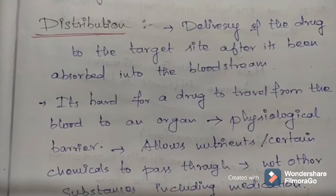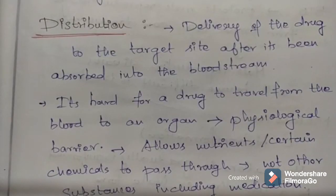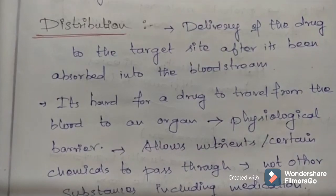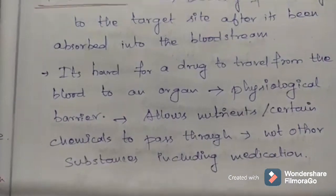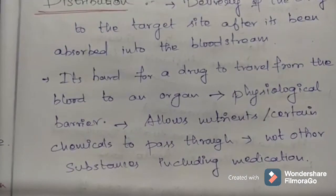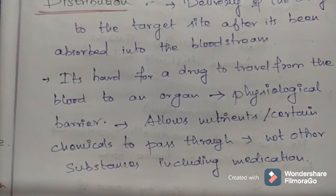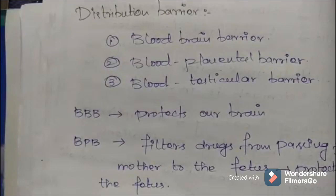The next phase in pharmacokinetics is distribution — the delivery of the drug to the target site after it has been absorbed into the bloodstream. It is usually hard for a drug to travel from the blood to an organ because of physiological barriers that are present. These barriers allow nutrients or certain chemicals to pass through, but not other substances, including medication — and that's where challenges begin.